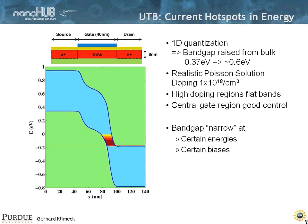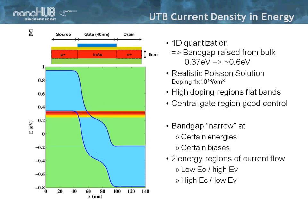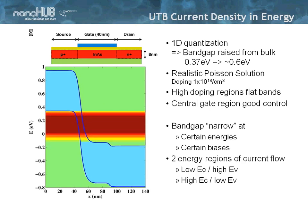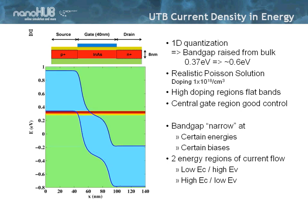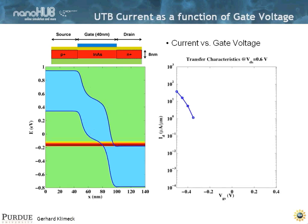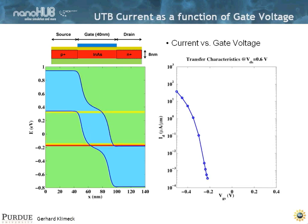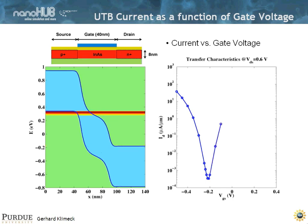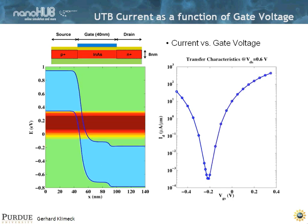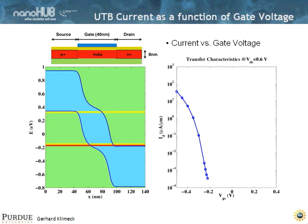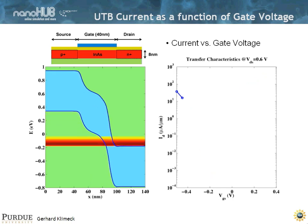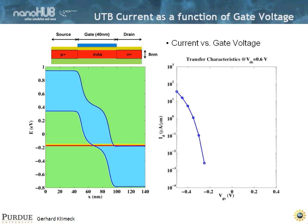And again, here for a different bias. Indeed, what is really shown here is the transmission coefficient that is being opened up as a function of gate voltage. And then you can convert this by integrating charge, momentum, and energy into a curve that gives you a current versus voltage.